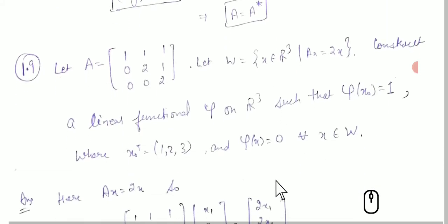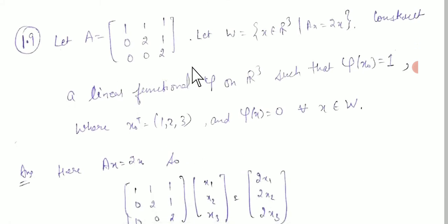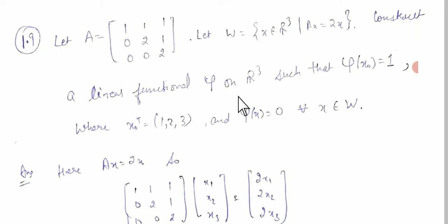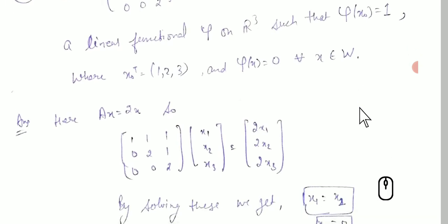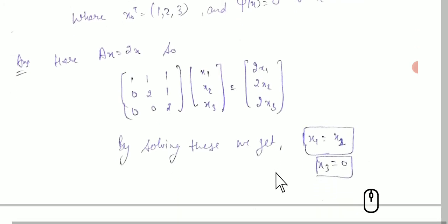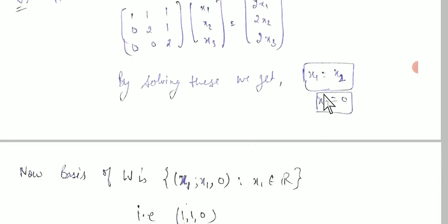For the 9th question, matrix A is given as [[1,1,1],[0,2,1],[0,0,2]] and W is the set of x in R³ such that Ax = 2x. We need to find a linear functional ψ on R³ such that ψ(x₀) = 1 where x₀ = (1,2,3), and ψ(x) = 0 for all x in W. Substituting a general vector (x1,x2,x3), we get x1 = x2 and x3 = 0, so basis of W is {(1,1,0)}.